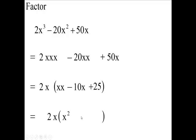Let me check this a little bit. You have 2x times x² is 2x³, that's right. 2x times -10x is -20x², and 2x times 25 is 50x. So now I have to factor this.